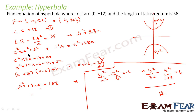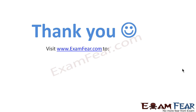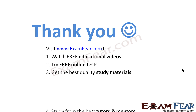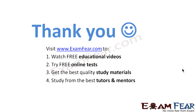So what we have done here: we had the foci, we got the value of c, we had the LR so we got the relation between b and a, and we also know c squared is equal to a squared plus b squared. Then we got the value of a, then the value of b, and then we wrote the equation y squared by a squared minus x squared by b squared is equal to 1. Thank you. Visit examfear.com to watch free educational videos, try free online tests, get the best quality study materials, study from the best tutors and mentors, and much more. Thanks once again.